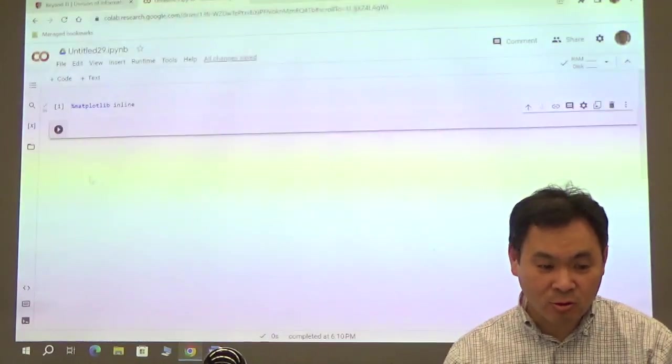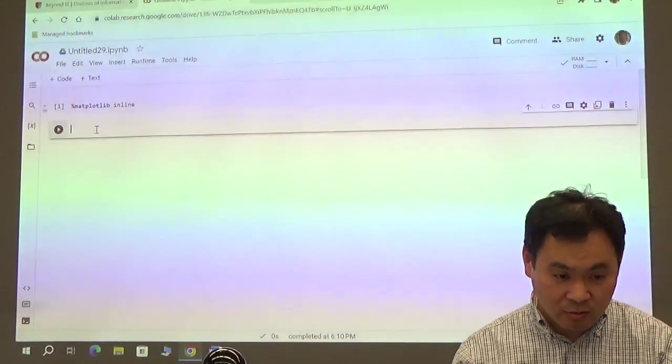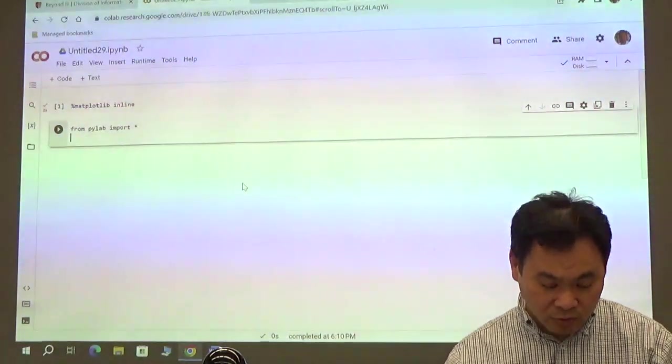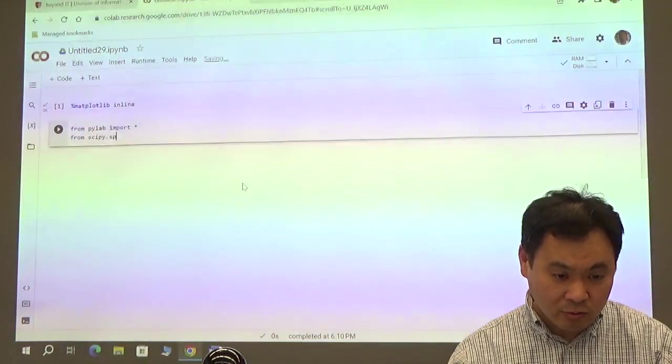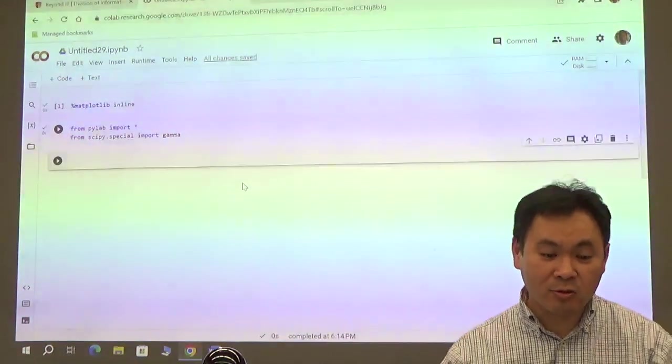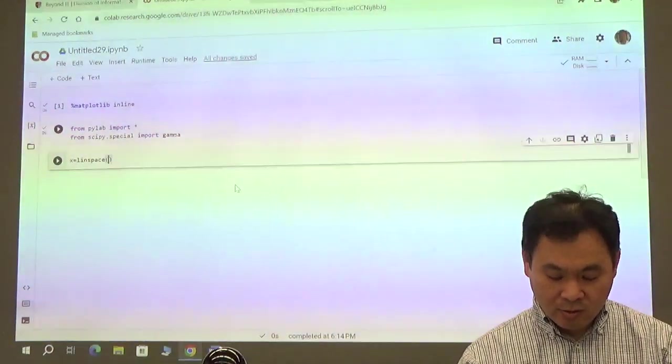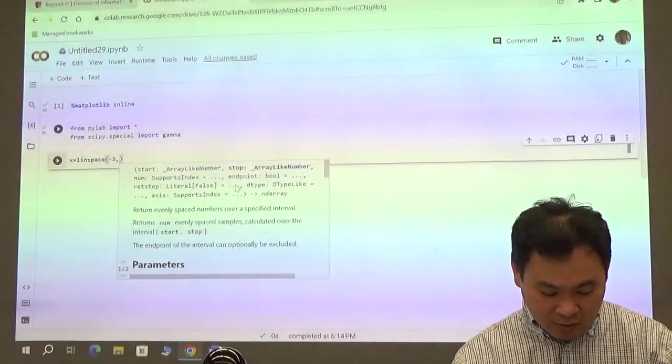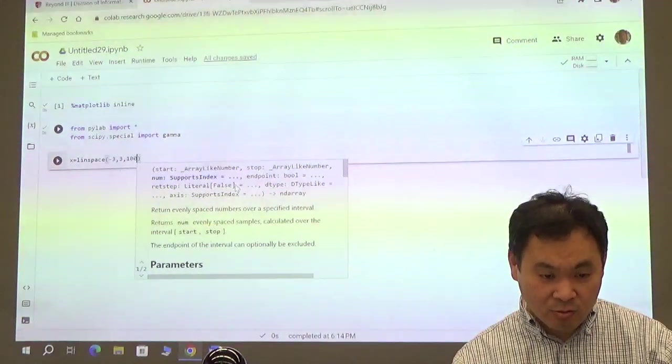All right, so let me go back to Google Colab. Let's import everything from PyLab. Import everything. And we will also import from SciPy gamma. We need the gamma function. So I want to show you the gamma function first. So x equals linspace. Let's say I want to plot it from negative 3 to positive 3. Let's divide this into 1,000 parts.